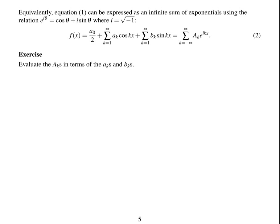Equivalently, Fourier series can be represented as an infinite sum of exponentials using the relationship e to the i-theta equals cos(theta) plus i·sin(theta), where i is the square root of minus one. As an exercise, work out how the big A_k's relate to the little a_k's and b_k's — they're going to be complex valued. The answer is available in the lecture notes to check your work.